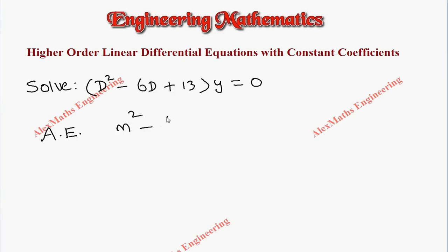m² - 6m + 13 = 0. Here the product is 13, sum is -6. It is not possible to factorize, so since we are not able to factorize this, we go for using the quadratic equation formula.